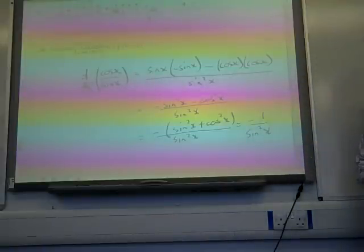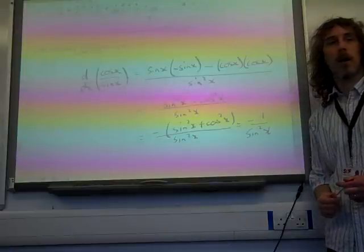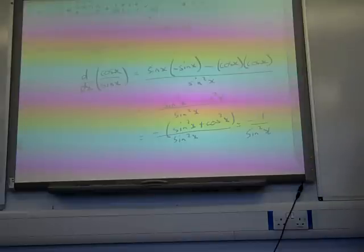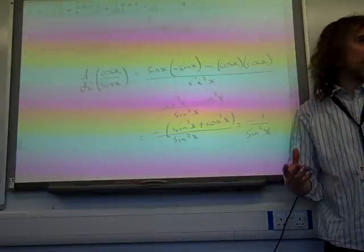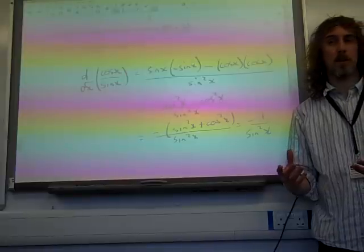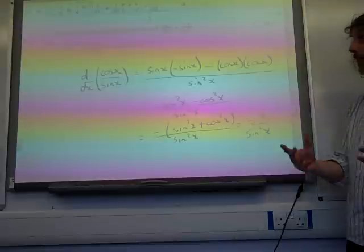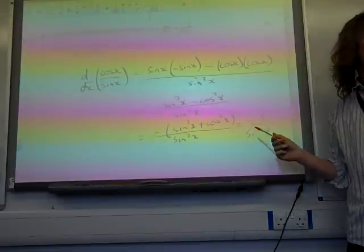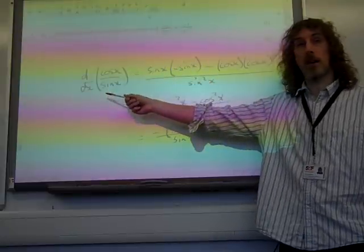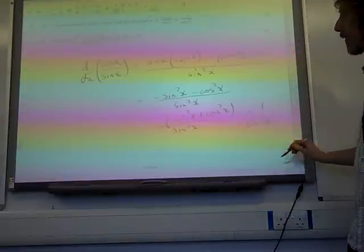Okay. Now, we've seen this before as well, that a question that begins at part 1 that asks you to differentiate something then goes into an integration question. And so we are already anticipating that at some point during this integration question, the integral of minus 1 over sine squared x is going to come up, because we know that that is cos x over sine x. So we've got one eye on that to see what happens later on.